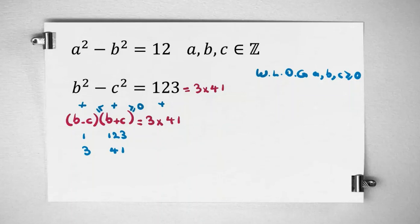Now, if we consider first case, b minus c is 1, b plus c is 123. We can find b and c. If we add these two equations, 2b equals 124. So b equals 62. And 2c, if we subtract, c equals 61. And b equals 62.